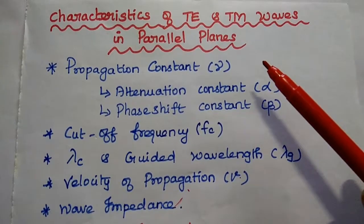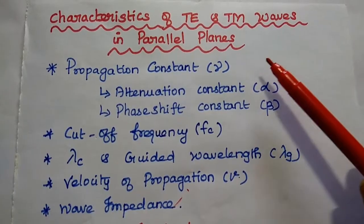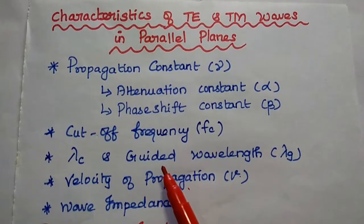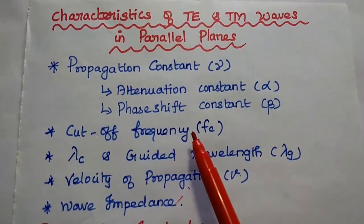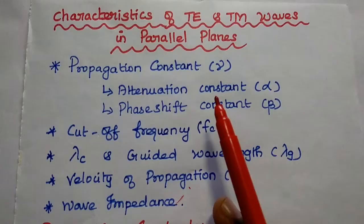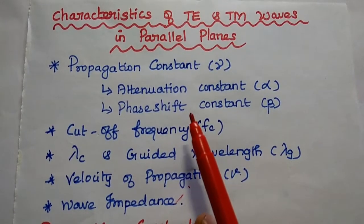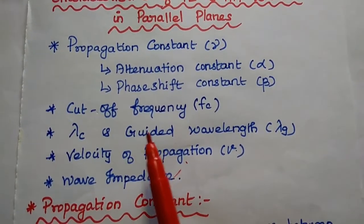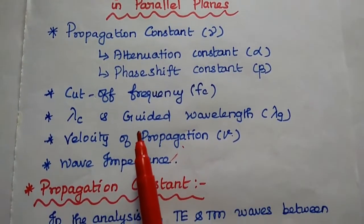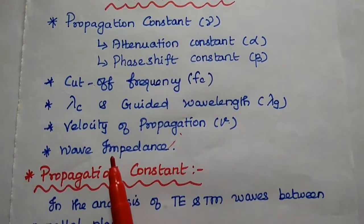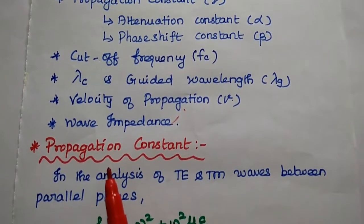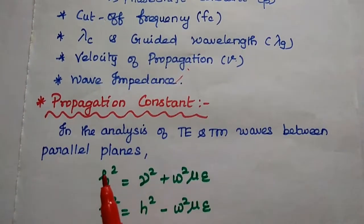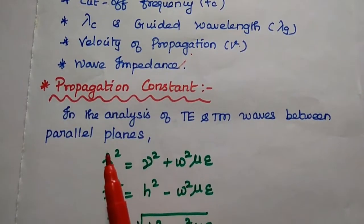Now we are going to discuss the characteristics of TE and TEM waves in parallel planes. The important characteristics of the electromagnetic waves are propagation constant gamma, which consists of the attenuation constant and phase shift constant, cutoff frequency, the cutoff wavelength and guided wavelength, velocity of propagation and wave impedance. These are the important characteristics to analyze the electromagnetic wave propagation in the parallel planes.